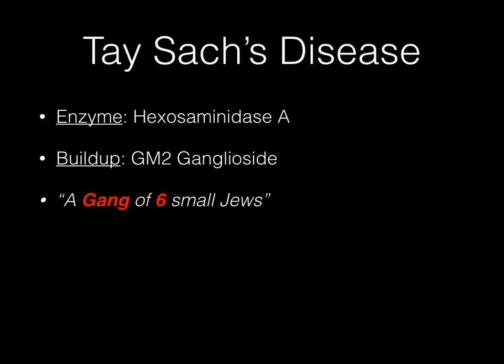Tay-Sachs disease is the first of two diseases we'll discuss that feature a cherry red spot on the macula — a very high-yield finding. The deficient enzyme is Hexosaminidase A, and the buildup is GM2 ganglioside. The mnemonic is: 'A gang of six small Jews.' Tay-Sachs is classically associated with Ashkenazi Jews. Gang clues you into ganglioside, and six clues you into hex — the prefix of Hexosaminidase, since hex means six.